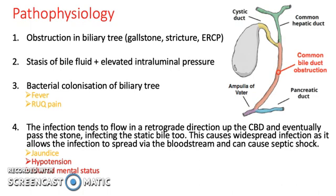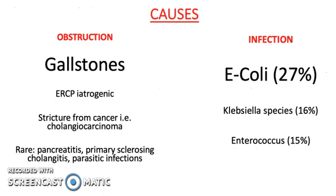This causes widespread infection as it allows infection to spread via the bloodstream and can cause septic shock, indicated by jaundice, hypotension, and altered mental status. Obstruction can be caused by gallstones, ERCP, iatrogenic causes, stricture from cancer, and rarely pancreatitis, primary sclerosing cholangitis, and parasitic infections. The bugs that can cause it include E. coli, Klebsiella species, and Enterococcus.